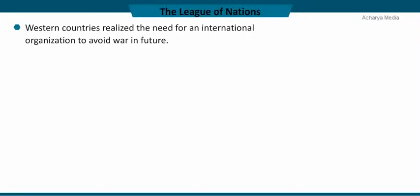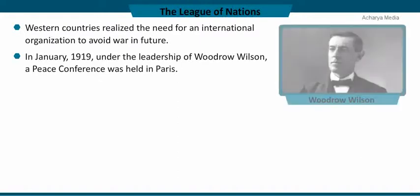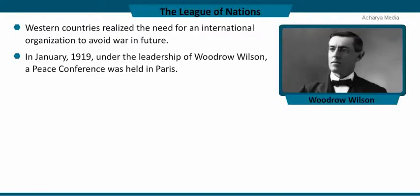Europe was devastated after the First World War. Western countries realized the need for an international organization to avoid war in the future. In January 1919, under the leadership of Woodrow Wilson, the President of the USA, a peace conference was held in Paris in which 42 countries participated.